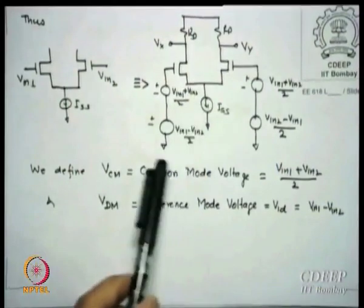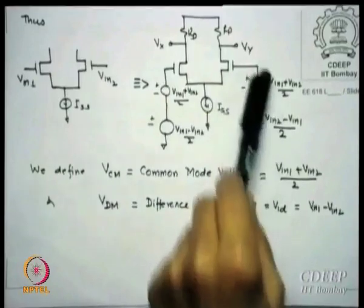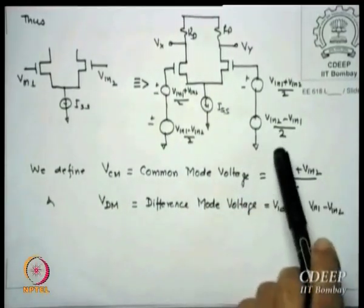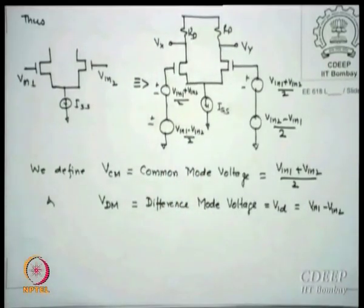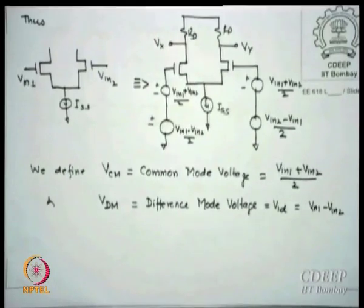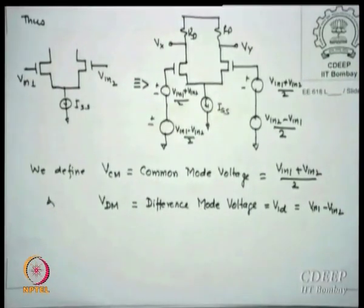We represent the inputs as a series combination of common mode signal and difference mode signal. Similarly for Vn2 on the other side. So regardless of the input, we can always break it into a common mode component and a difference mode component. This means we are not saying the input must go by delta — whatever it is, it will always decompose into some common mode and some difference mode signal.